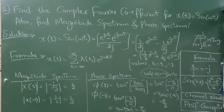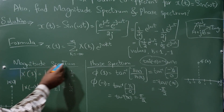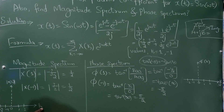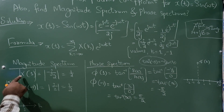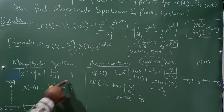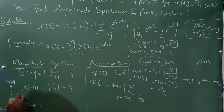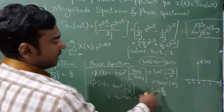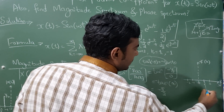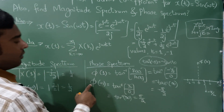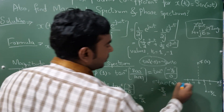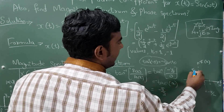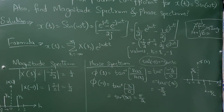For the magnitude spectrum: the x-axis is k and the y-axis is |X(k)|. At k = 1, the magnitude is 1/2, and at k = -1, the magnitude is also 1/2. For the phase spectrum: at k = 1, φ(1) = -π/2, so the line is drawn downward. At k = -1, φ(-1) = π/2, so the line is drawn upward. This completes the answer.